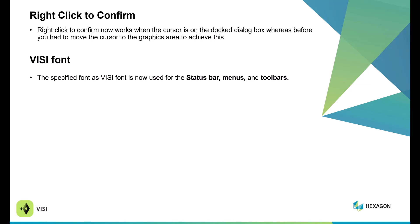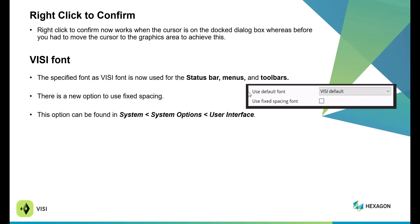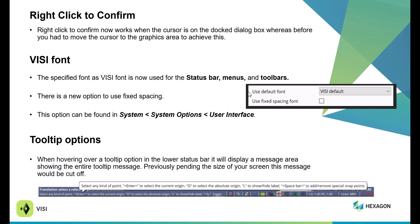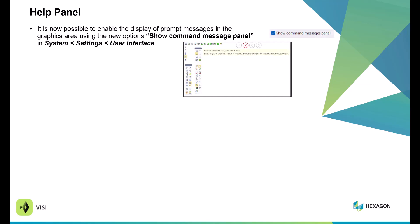Within Visi Fonts, you now have the ability to display the default Visi Font from the status bar menu and toolbars, and there is a new option to use fixed spacing under System Options, User Interface Area. Within Tool Tips, if you hover over a message area that isn't big enough to show all the text, you get a tooltip showing the full explanation. It is now possible to display the message area right on your interface area, making it easier to see exactly what the command is looking for — right in the foreground.